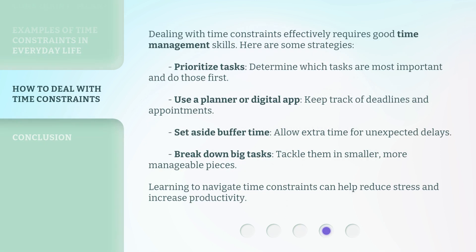Dealing with time constraints effectively requires good time management skills. Here are some strategies: Prioritize tasks — determine which tasks are most important and do those first. Use a planner or digital app — keep track of deadlines and appointments. Set aside buffer time — allow extra time for unexpected delays. Break down big tasks — tackle them in smaller, more manageable pieces. Learning to navigate time constraints can help reduce stress and increase productivity.